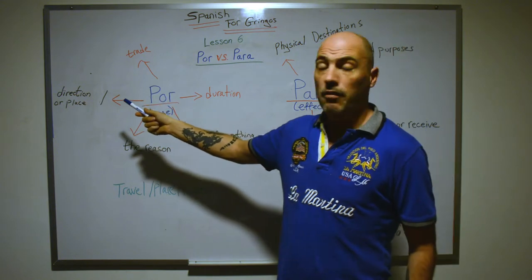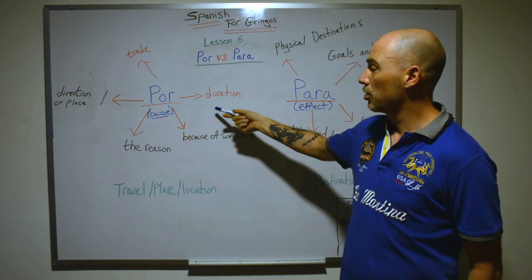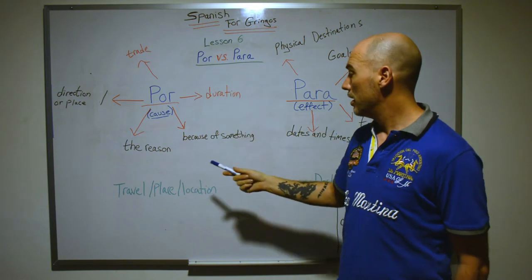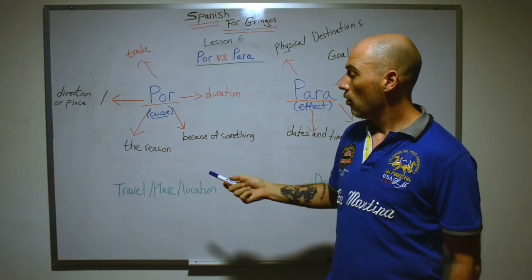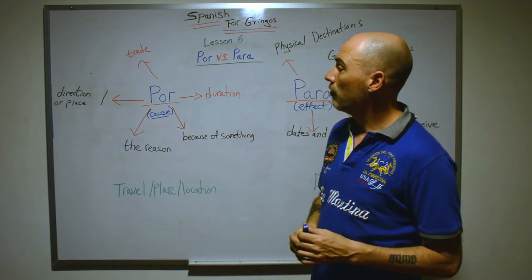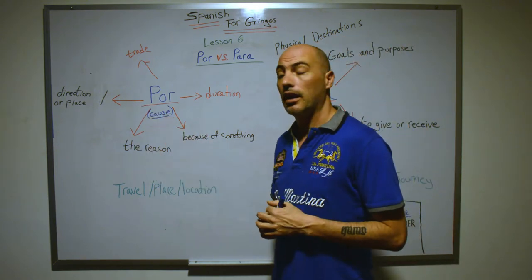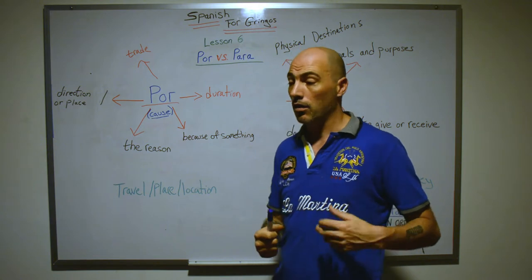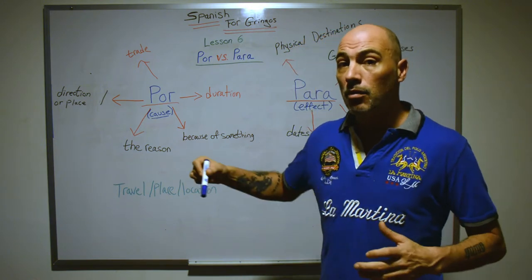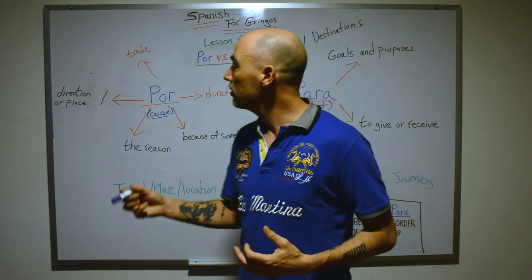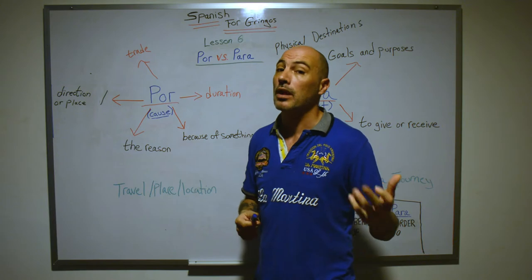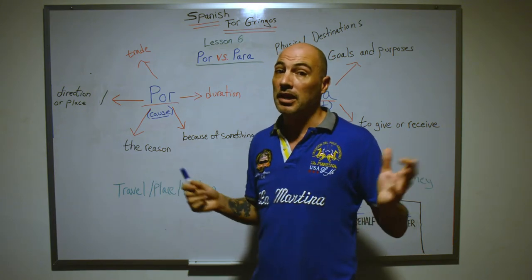Por can be used for: direction or place, duration of time, trade or commerce, a reason or 'because of' something, or a travel place or location. For direction or place — if you're going somewhere to get to a place, they would use por. An example would be: vamos por la playa — let's go for the beach.